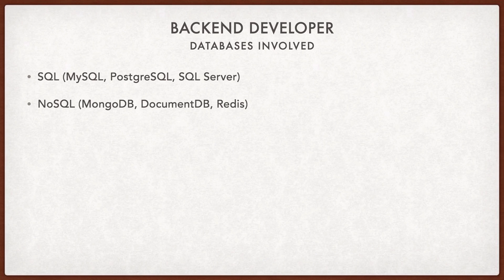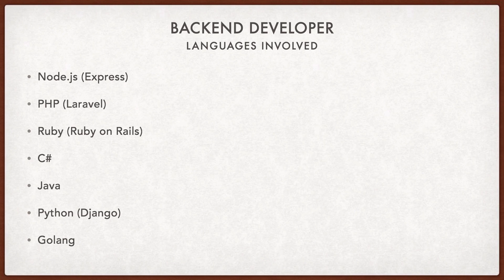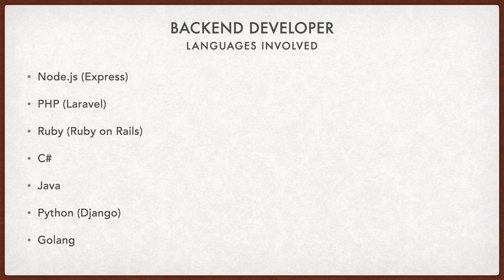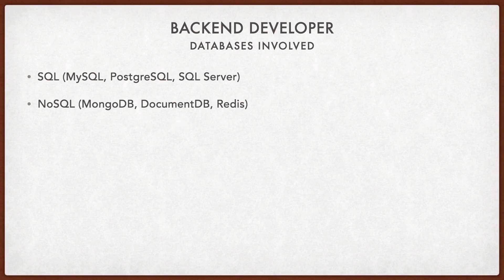As a back-end developer, not only languages but you also need to work with databases. Databases are primarily of two types: SQL and NoSQL. SQL databases include MySQL, PostgreSQL, and SQL Server. NoSQL includes MongoDB, DocumentDB from Amazon, and Redis, which is often used in caching systems. To be called a back-end developer, you should master any language in depth, and if you're already a front-end developer, Node.js gives you an added advantage since it's just JavaScript on the server.